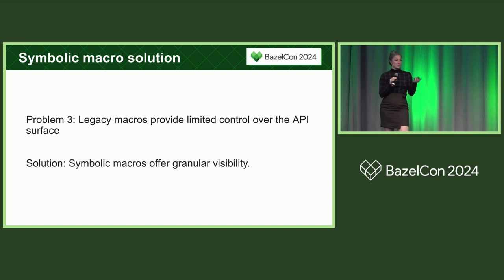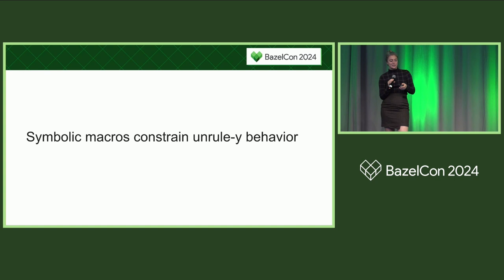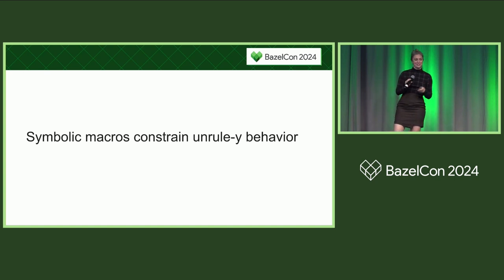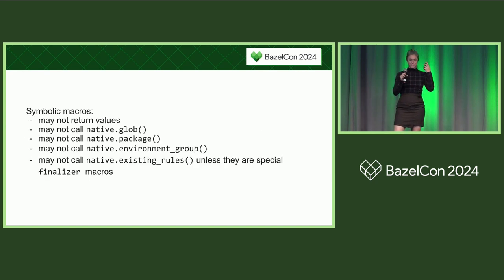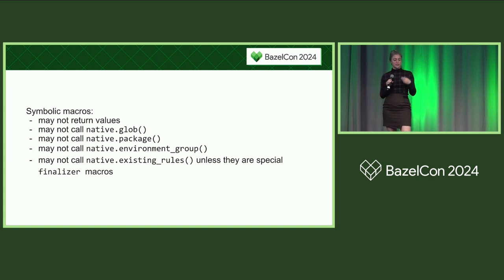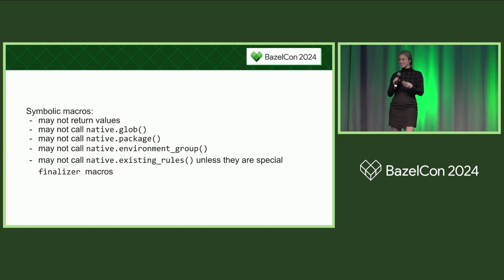Symbolic macros also constrain some unruly behavior, which is good for tooling and for humans trying to reason about macros. In particular, symbolic macros can't return values, they can't call native.glob, native.package, or native.environment_group. And they may not call native.existing_rules unless they are special finalizer macros.